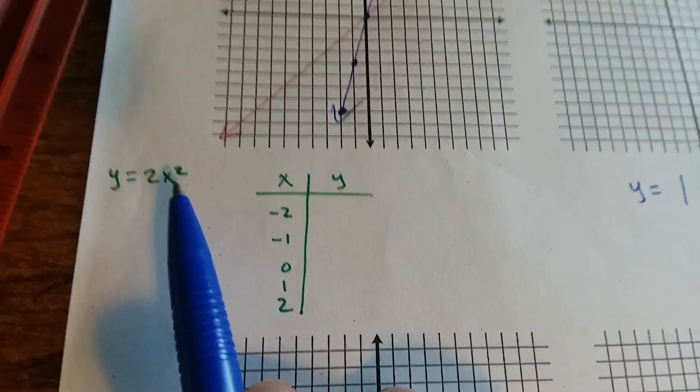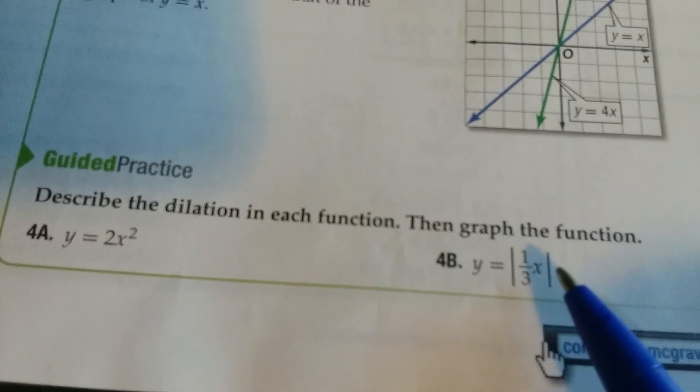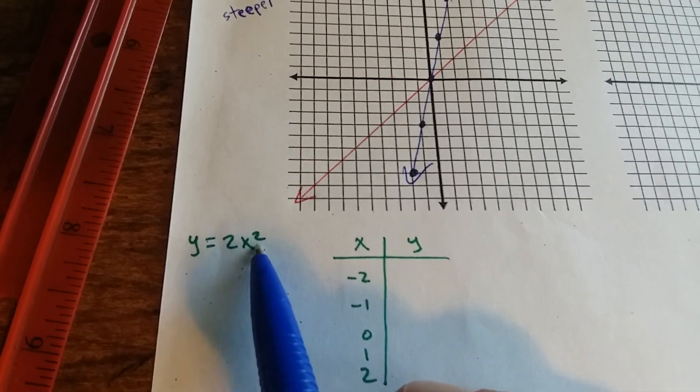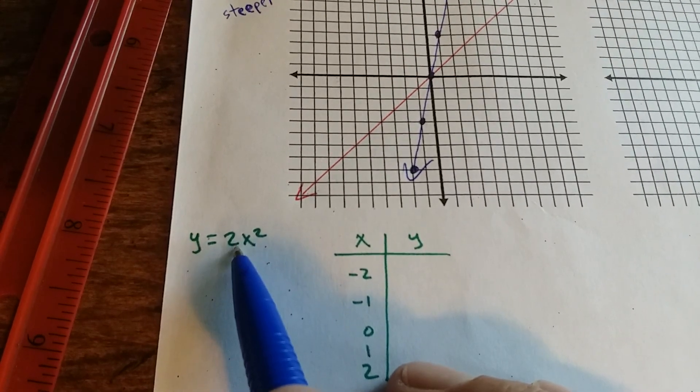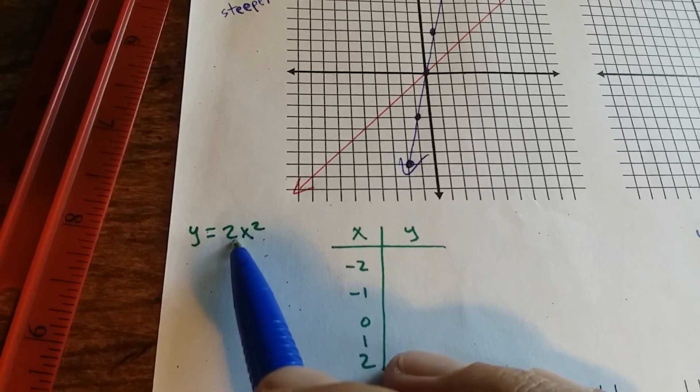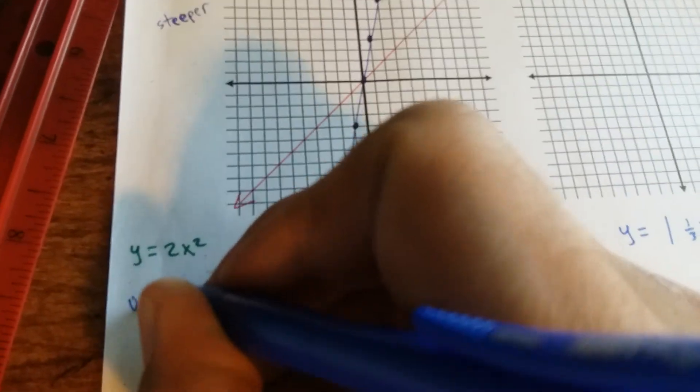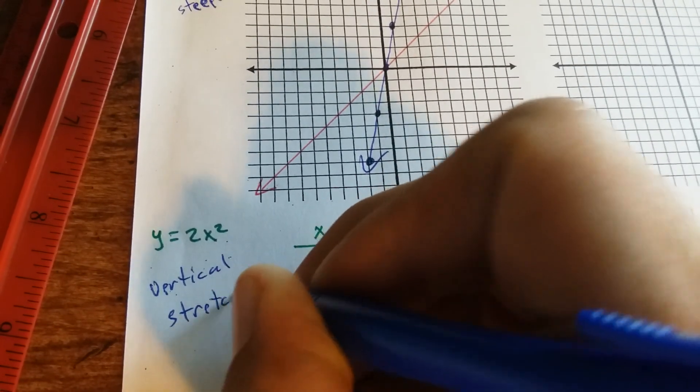But this one's not linear if you look at our next example. So do 4a and 4b and then resume the video. Describe the dilation in each function, then graph the function. Remember, if the coefficient in front of the variable x is greater than 1, it is a vertical stretch. So write vertical stretch.